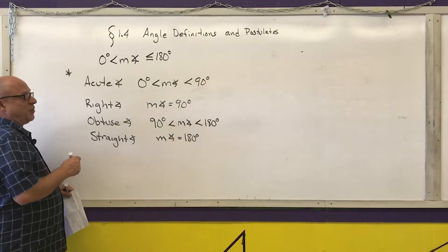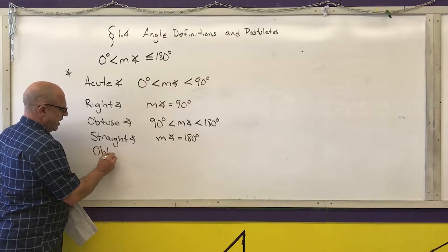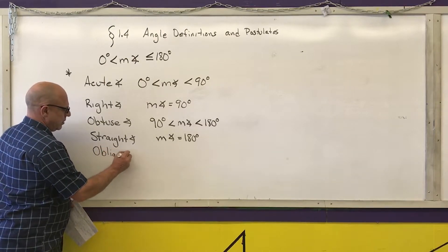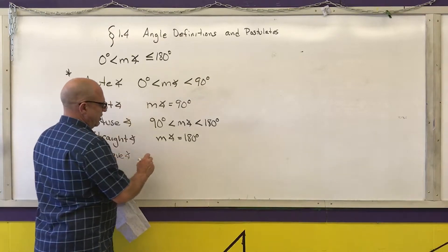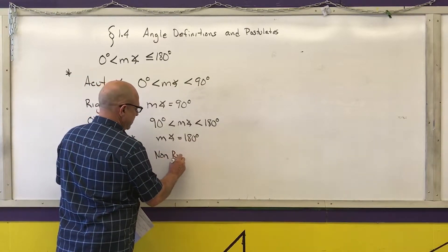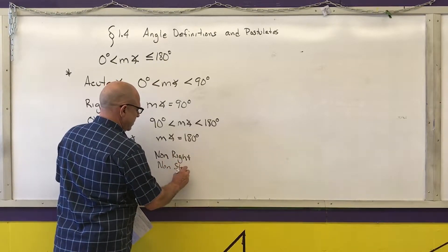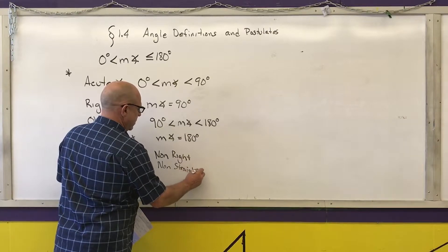One that's not in your book but that we will talk about in class is called an oblique angle, and an oblique angle is a non-right, non-straight angle.